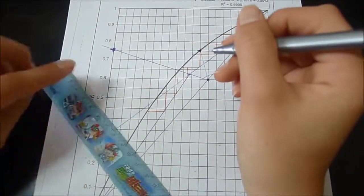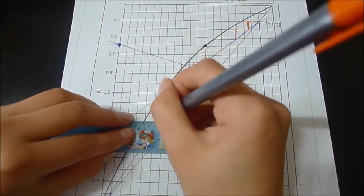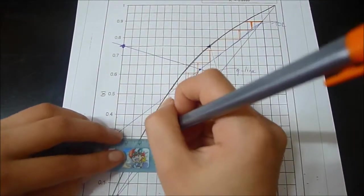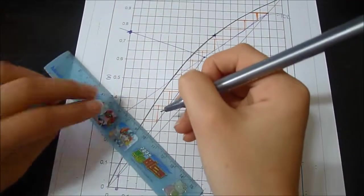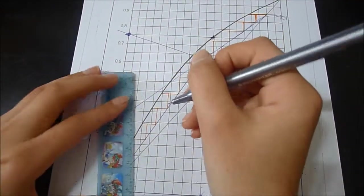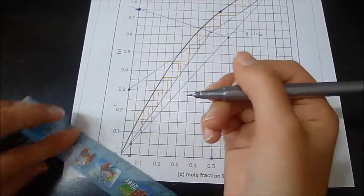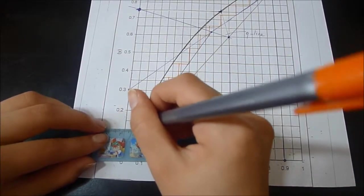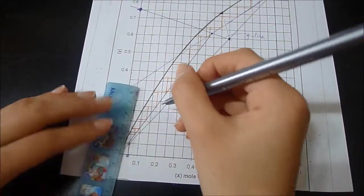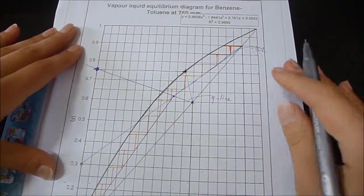The number of stages that we have when the Murphy efficiency is low, we have more stages. If efficiency is perfect, then we have less stages. But if the efficiency is low, then we have more stages.